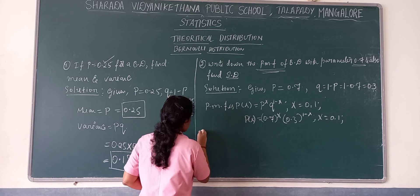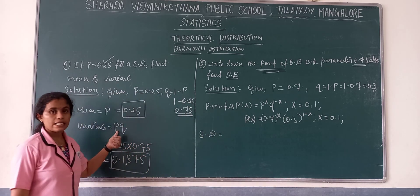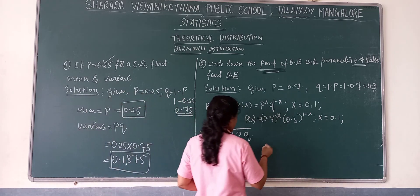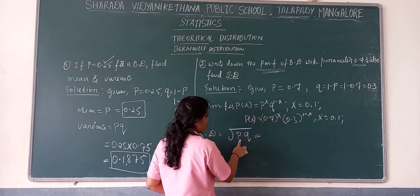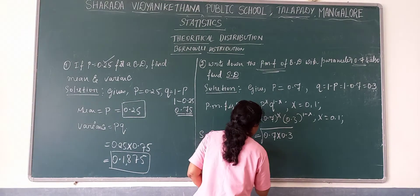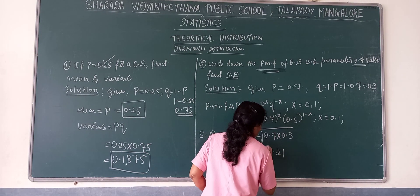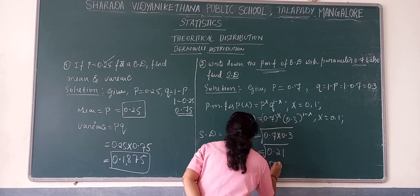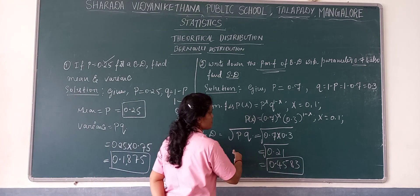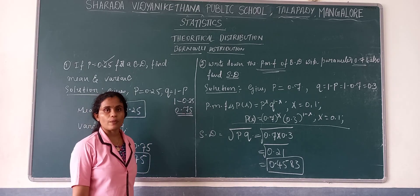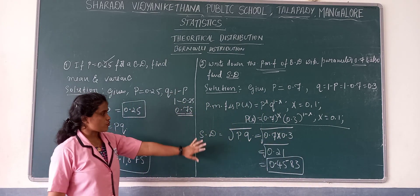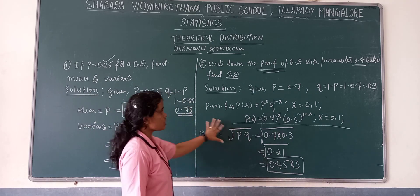Next, find standard deviation. The formula for standard deviation is √(PQ). Variance = P × Q = 0.7 × 0.3 = 0.21. Taking the root of 0.21, we get 0.4583. So the standard deviation of this distribution is approximately 0.4583.